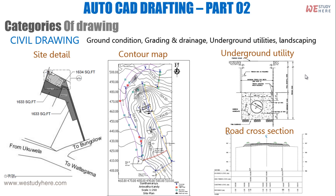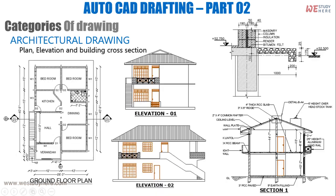Civil drawings cover grading and drainage — grading meaning the slope of the land — underground utilities, how pipes are laid underground, and landscaping. Civil drawings include site details, contour maps, underground utilities, and road cross-sections. They are called civil drawings because civil engineers normally prepare them.